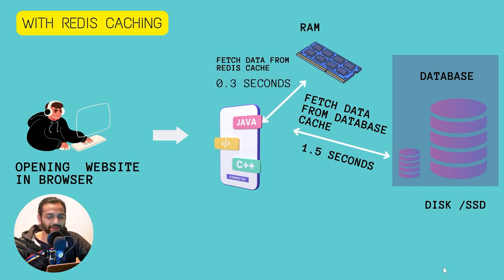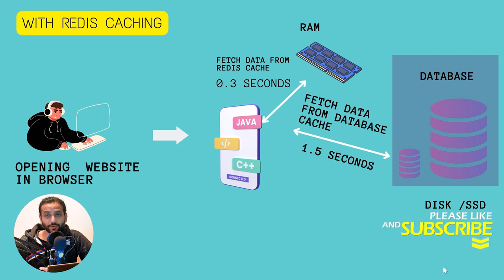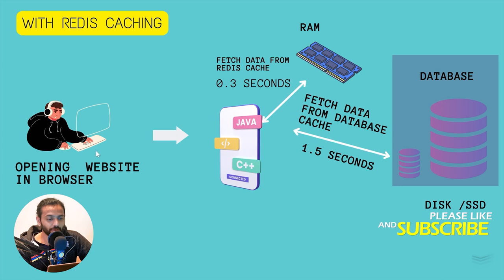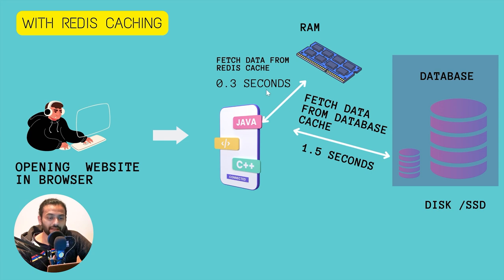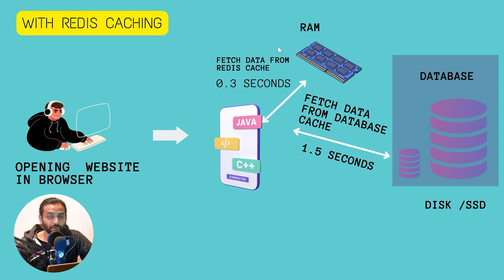Let me show you another graphic explaining what Redis cache does. As you saw, without Redis the website code requests the database cache and it takes 1.5 seconds. But when we install Redis cache, it creates a copy of this cache on RAM. Yes, servers also have RAM, and RAM is really fast compared to a disk-based database.